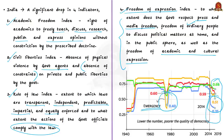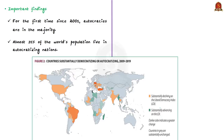Based on these findings, the report states that India is moving towards autocratization. The report also outlines that India is on the verge of losing its status as a democracy, due to the severely shrinking space for the media, civil society, and opposition under the current Prime Minister of India.